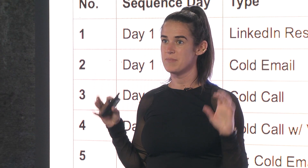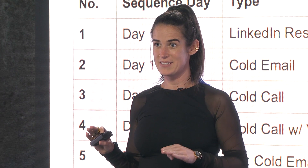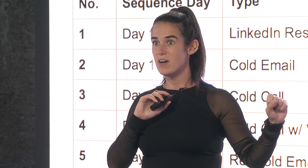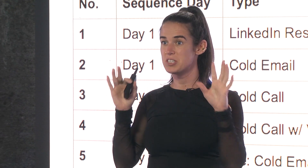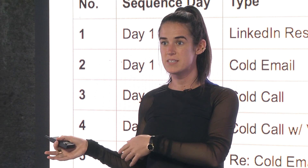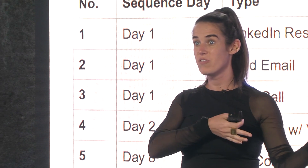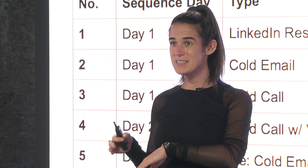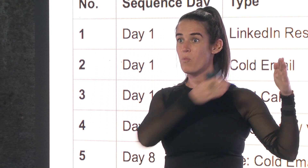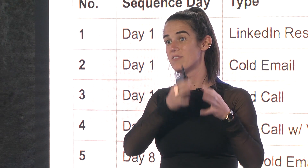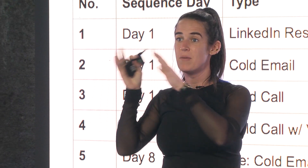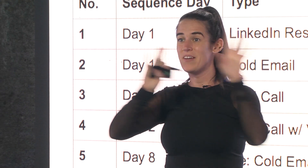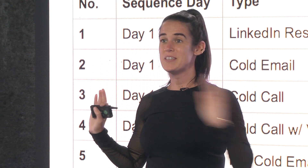Every sequence I have is 16 steps over 21 business days. I follow the theory of MJ Hoffman, the author of 'Why You, Why You Now,' who did a lot of research on when you should reach out and how aggressive you should be. His theory: be lighter on the front end and more aggressive on the back end. Reps are normally flipped — super aggressive at the beginning and then they peter off, teaching prospects that if they wait long enough, you'll go away.